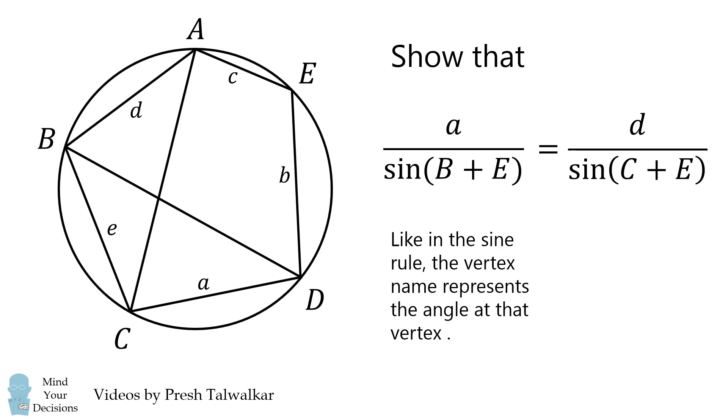Like in the sine rule, the vertex name represents the angle at that vertex. This question was asked in the 2019 HSC Extension 2 Mathematics Exam Question 16 Part C. It was the last question in a test given to year 12 students in Australia who are about 16 to 18 years old.